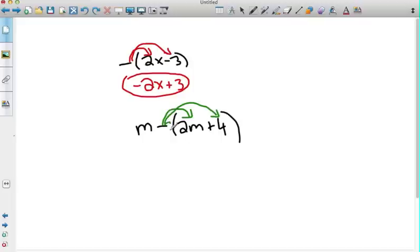So I now have m, negative 1 times 2 gives me a negative 2m. Negative 1 times positive 4 gives me a negative 4. Combine like terms and I have a negative m minus 4.